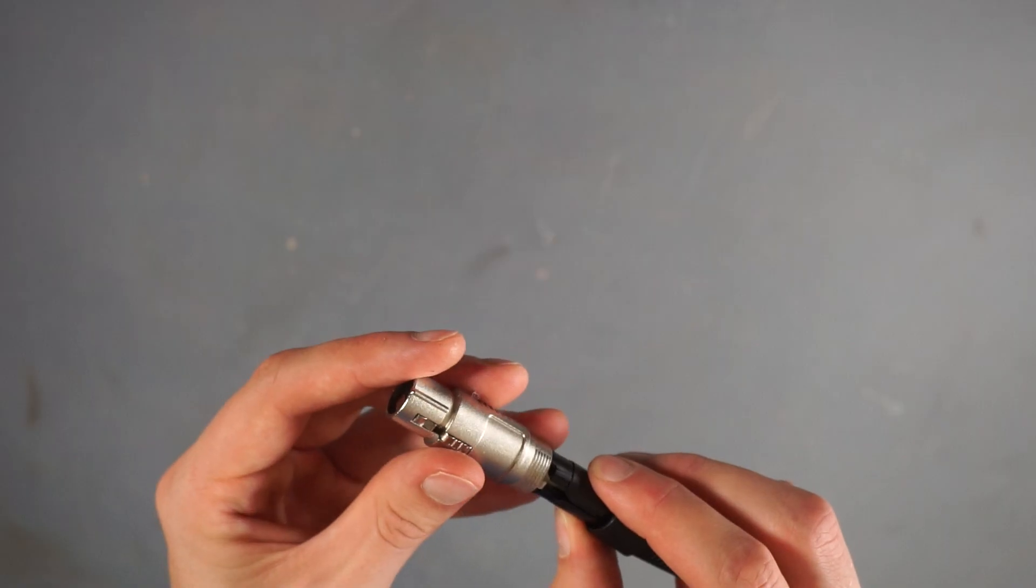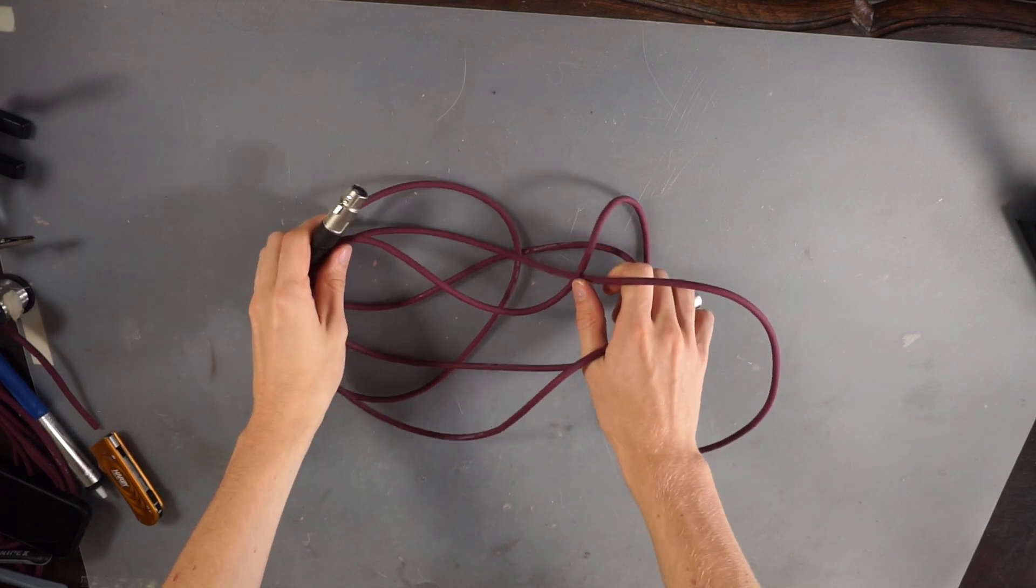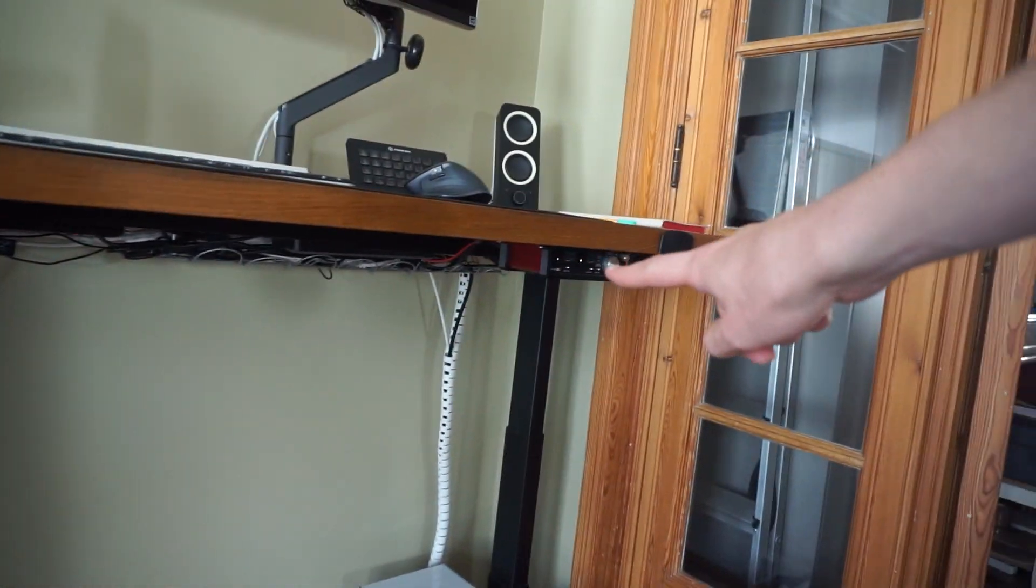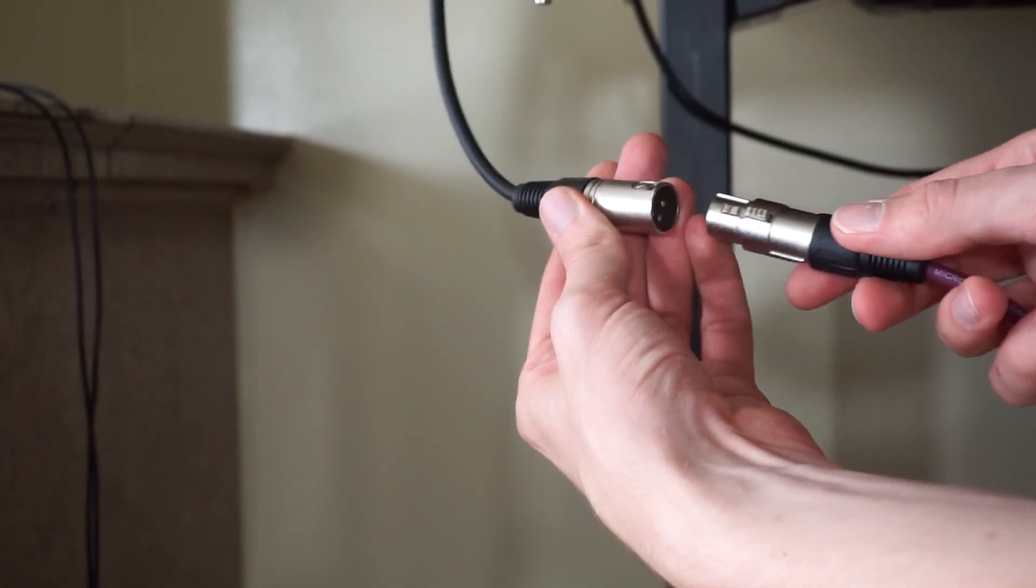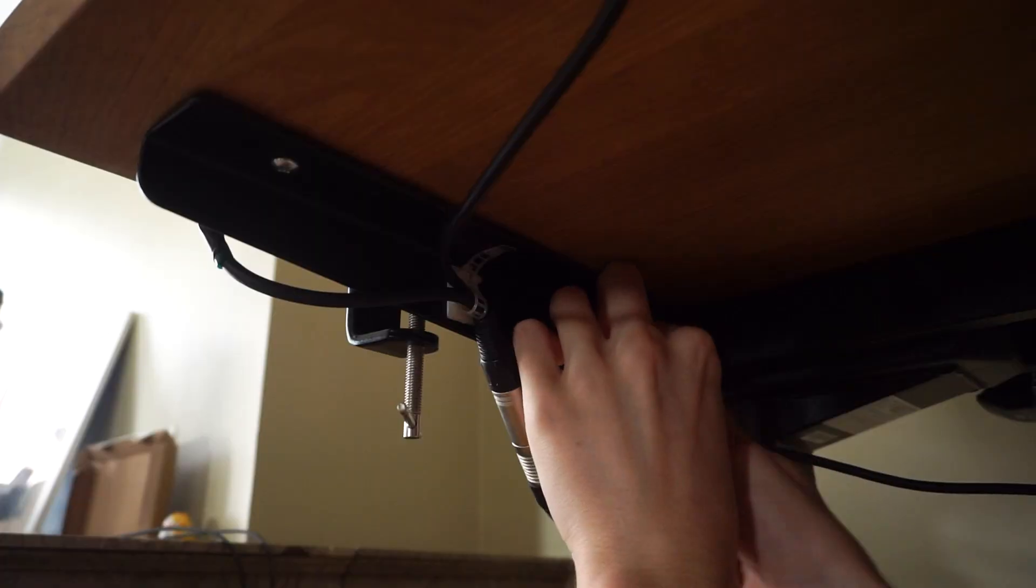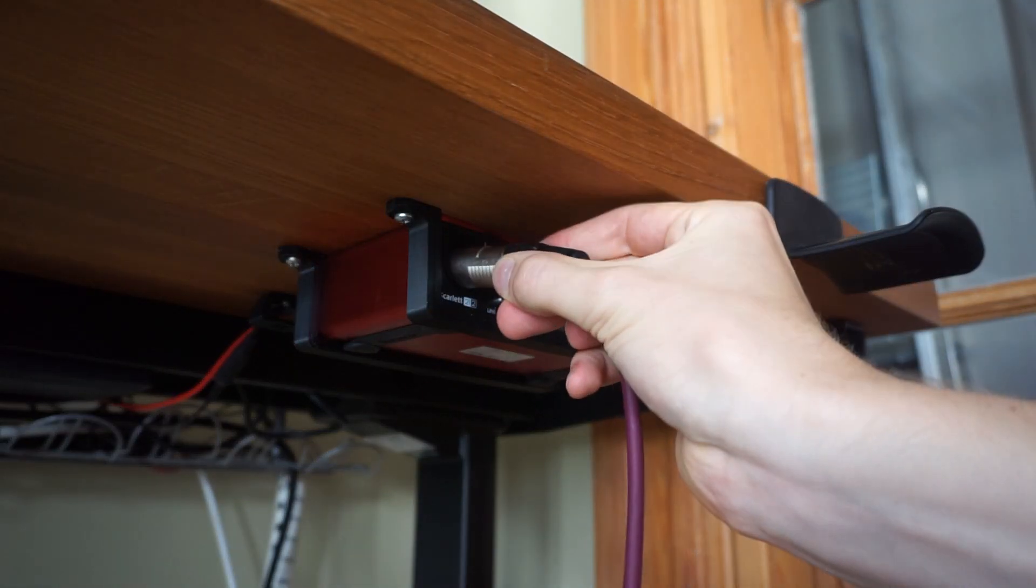And here we have it, a cable that shows the perfect length. This one is going on this test between the microphone and the audio card. And now because it's not too long anymore, we can perfectly hide it for the cable management.